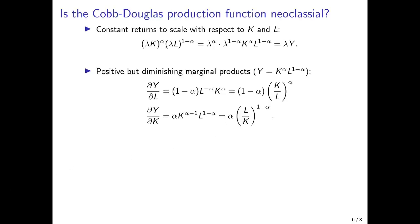For the second property — positive diminishing marginal product — we take derivatives with respect to labor and capital. The derivative with respect to labor gives one minus alpha times L to the power of minus alpha times K to the power of alpha, which we can rewrite as one minus alpha times (K/L) to the power of alpha. This is diminishing in labor: as we employ more labor, the marginal product declines, and as L goes to infinity it goes to zero.